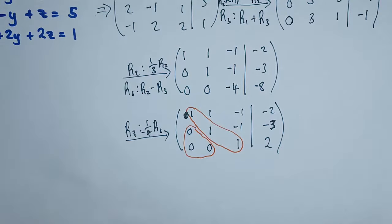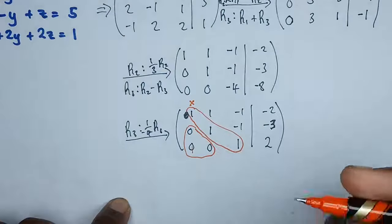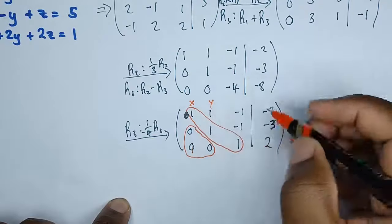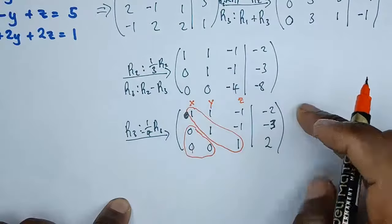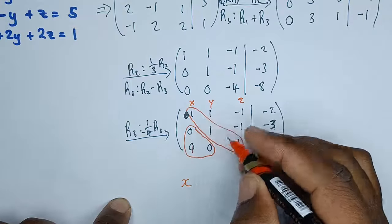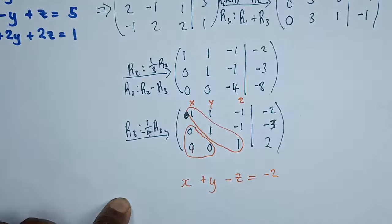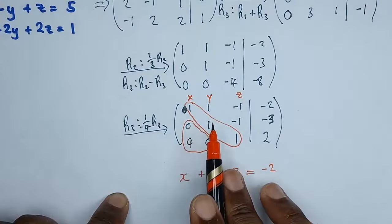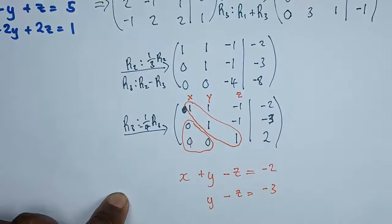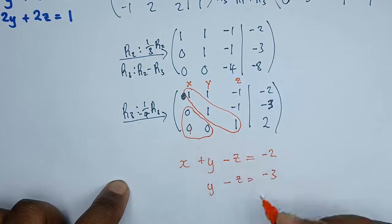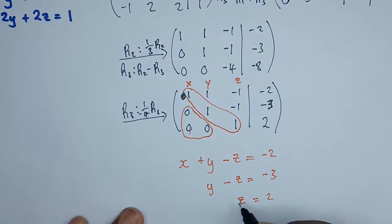We've managed to achieve the three zeros and the three ones on the major diagonal. Now remember: this column represents the x coefficients, this one the y coefficients, and this one the z coefficients. Let's create three equations. The first row gives: x + y - z = negative 2. The second row gives: y - z = negative 3. The third row gives: z = 2. So just by observation, we have already found the value of z.